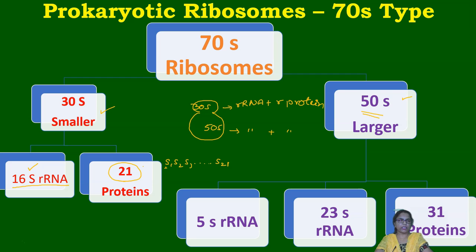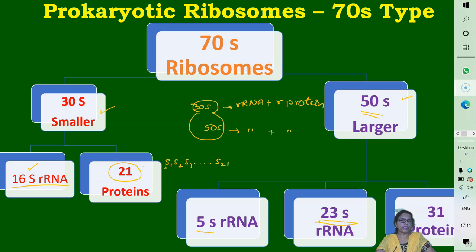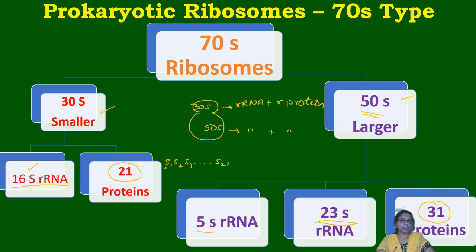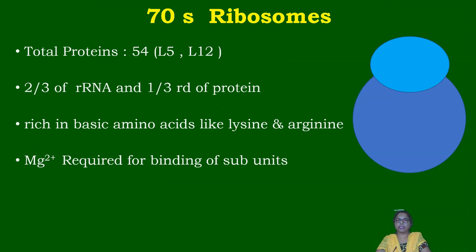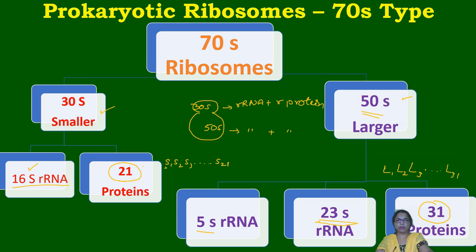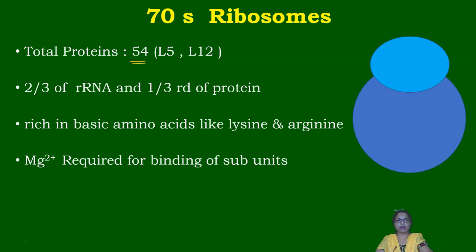The 50S larger subunit also contains ribosomal RNA plus ribosomal proteins. The rRNAs present in the larger subunit are 5S rRNA and 23S rRNA. There are about 31 different ribosomal proteins designated L1 through L31, where 'L' represents the larger subunit.